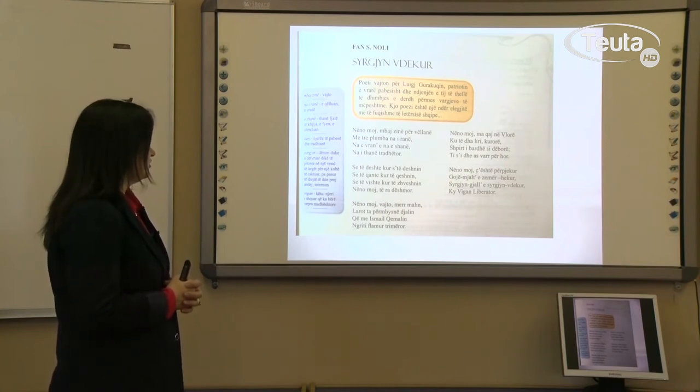Sürgün i vdekur! Nënë moj më bajzi përdhe e lani, me tri plumba në i ranë, në irë e në shan, në ithanë të radhe të tjerë. Sa të deshte kur sa të deshnin, sa të qante kur të qeshnin, sa të vishte kur të zhvishnin, nënë moj të radhe të tjerë. Nënë moj vajto e më mërzitë, larosh të përmbysin djalin, qëmë Ismail që nga mali ngriti flamur trimëror.